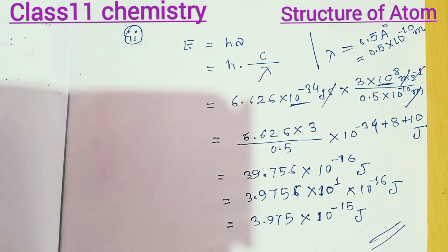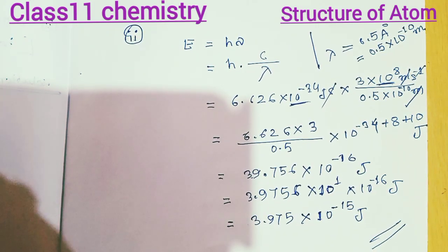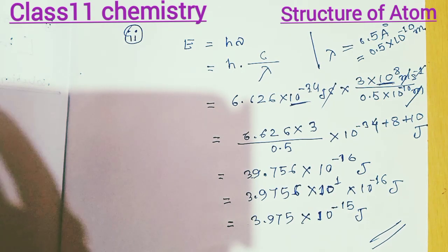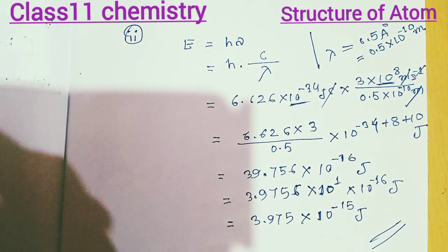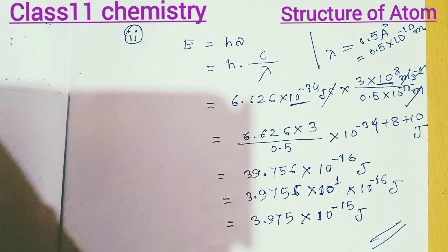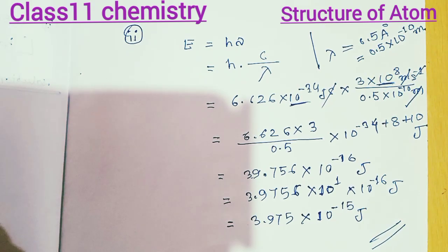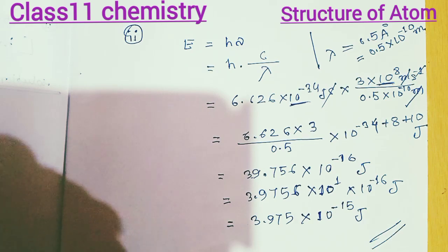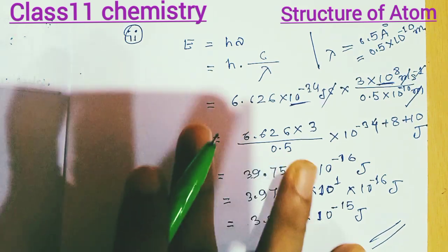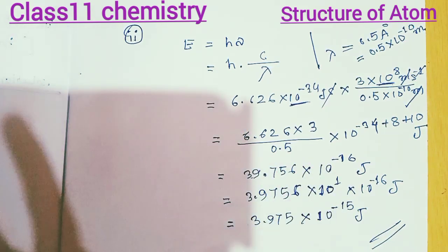So we have to do this directly. The energy is equal to hν. The component is equal to wavelength, speed of light — that is equal to the calculated value.